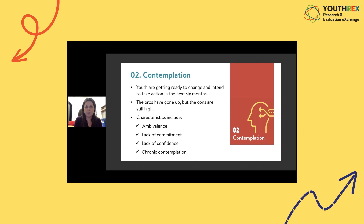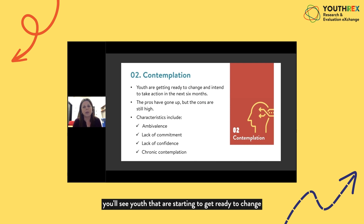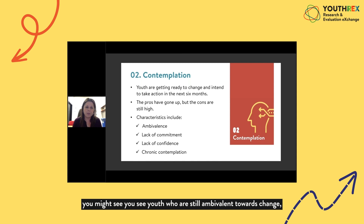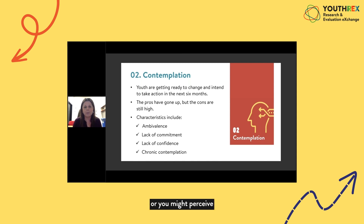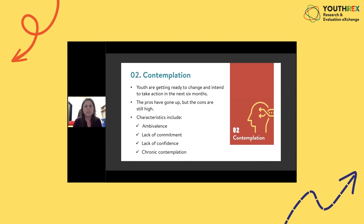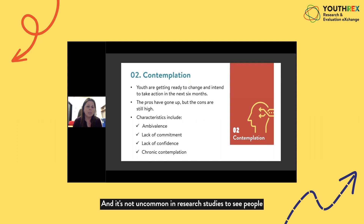In the contemplation stage, youth are starting to get ready to change, or they plan on taking some kind of action in the next six months. The pros have gone up a little, but the cons of continuing the behaviour are still very high. You might see youth who are still ambivalent towards change, with a perceived lack of commitment or confidence. They may be stuck in this stage for some time — research studies have shown people stuck here for up to two years before they're ready to start preparing.